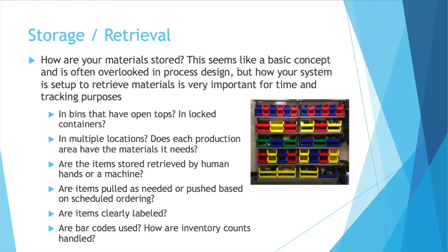Because this is related to your materials, and I touched on some of these already, I'll breeze through this section quickly. Stemming from your materials, how will they be stored and how will you retrieve them? It seems like a basic idea — we just buy things in boxes, we'll cut the boxes open. But when you get into very precise, high-end, fast systems, storage is very important. Are your materials stored in bins with open tops? Are the containers locked? Do you have the same material in multiple locations? Does each production area have the materials it needs? How are the items being retrieved — by human workers, by a machine, or by both?